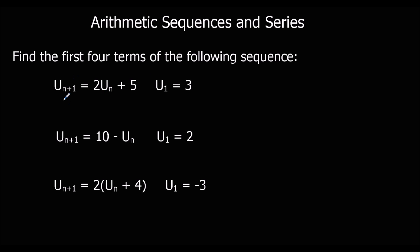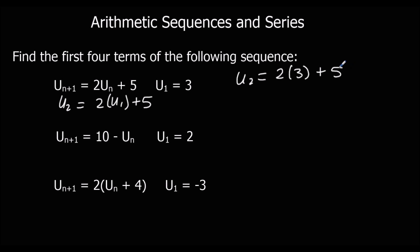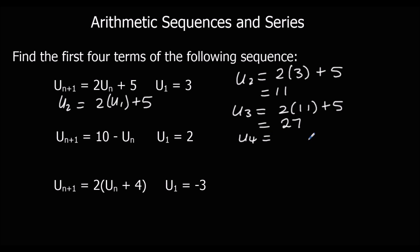To find the second term, I'm going to do two lots of the first term plus five. So the second term is going to be two threes plus five. Six plus five is eleven. Then to find the third term, it'll be two elevens plus five, which is twenty-two plus five, which is twenty-seven. And to find the fourth term, two twenty-sevens plus five — so that's fifty-four plus five, which is fifty-nine.